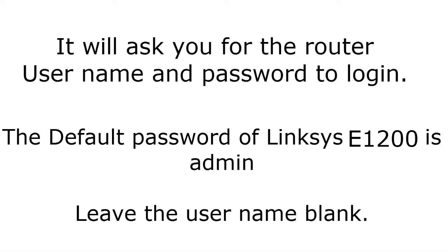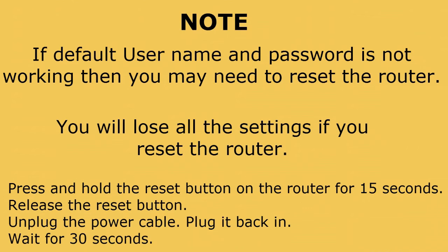If you are setting up the router for the first time or want to reconfigure it, reset the router to factory default settings. Press and hold the small reset button for 15 seconds, release it, then unplug the power cable and plug it back in. Wait 30 seconds — all these steps are also available on my website, Fix Home Network, linked in the description.